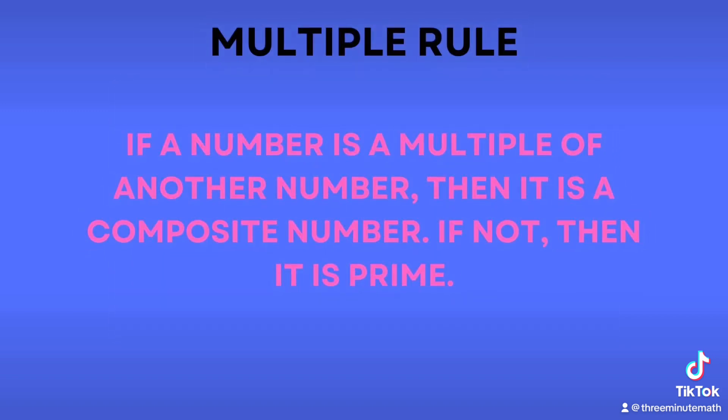Let's first look at determining prime and composite numbers using multiples. If a number is a multiple of another number, then it's composite. If not, then it's prime.